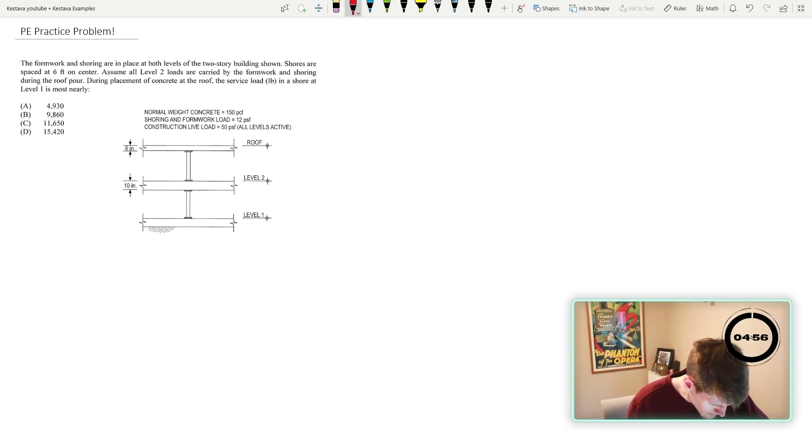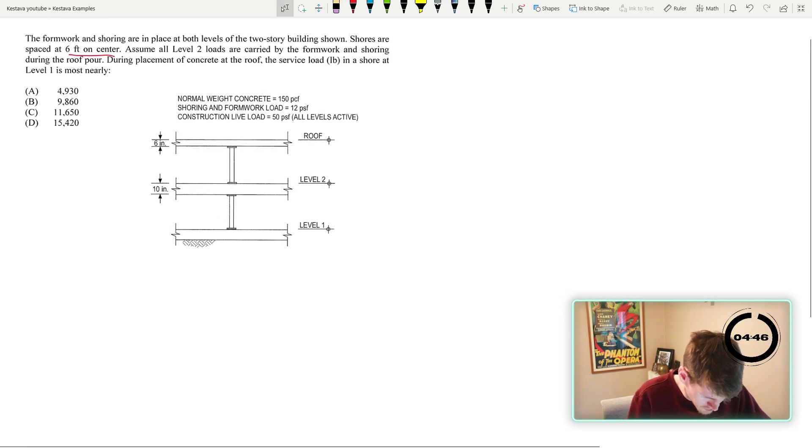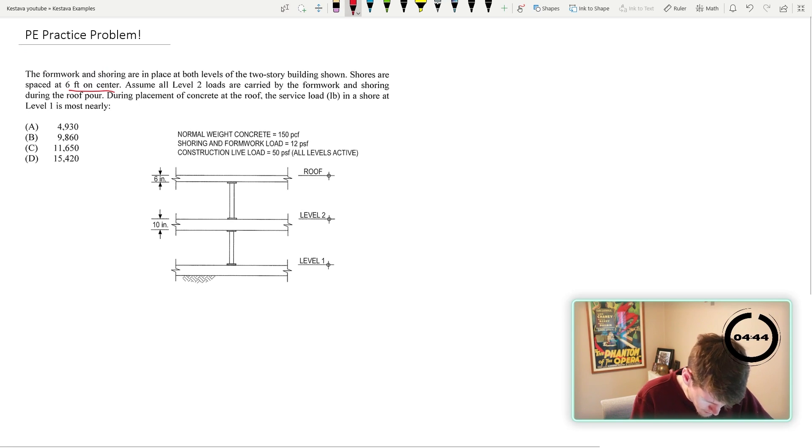Okay. Formwork and shoring in place at both levels, two-story building. Shores are spaced at six feet on center. I want that. I'm going to zoom in a little bit. Assume all level two loads are carried by the formwork and shoring during the roof pour. All right. All level two loads during placement of concrete at the roof, the service load. Okay. In the shore at level one is most nearly okay.